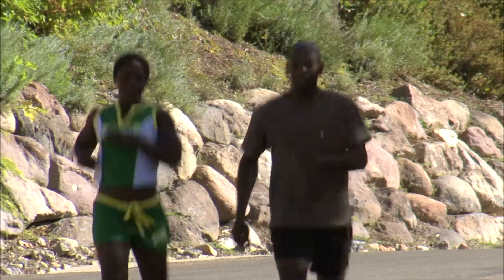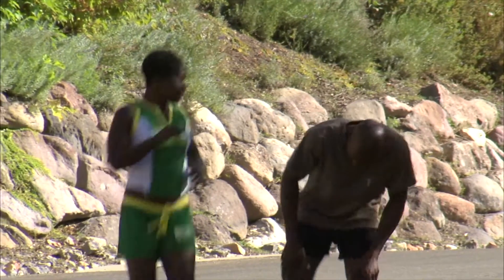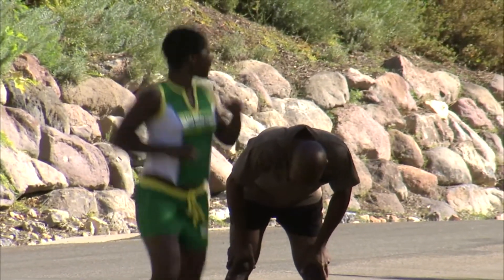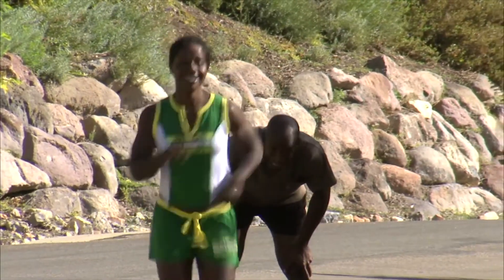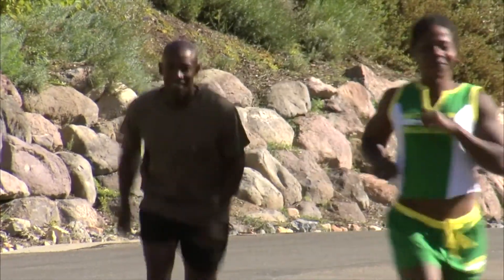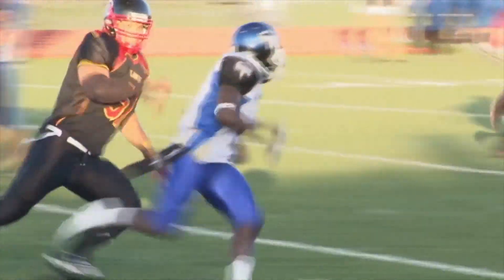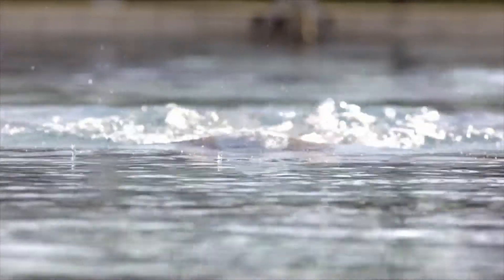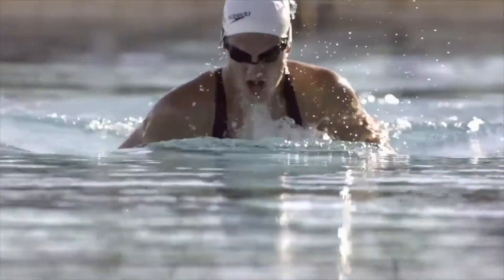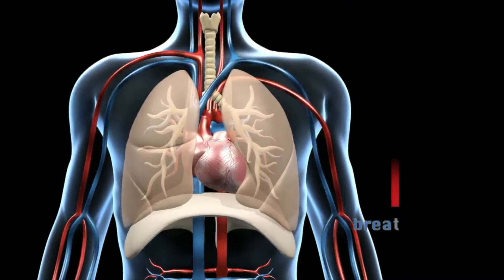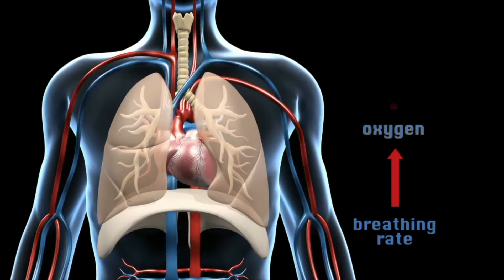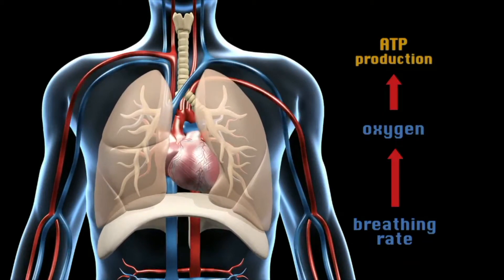Produced by aerobic respiration, ATP is a high-energy phosphate molecule that provides energy needed by muscle cells. To supply the extra ATP needed during exercise, our circulatory and respiratory systems work together to increase the oxygen and energy needed by muscles. Our breathing rate increases to get more oxygen, which is needed for ATP production.